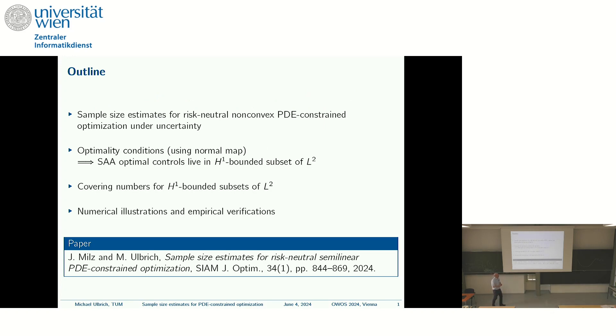We will consider sample size estimates, which are non-asymptotic in a non-convex PDE-constrained context for optimization and uncertainty. Most of the time, the PDE will be hidden. So essentially, we have an infinite-dimensional stochastic optimization problem that enjoys a certain structure that we can use. If time permits, I will show some numerical illustrations at the end. We have a recent paper on this in SIOPT.